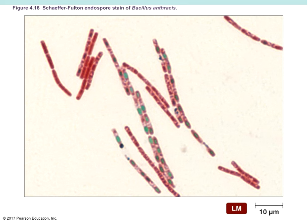Endospore staining is another staining mechanism we will use in class. It uses malachite green — we use steam to drive the malachite green stain into the inside of the cell. We can see whether or not bacillus species form endospores. What we're particularly looking at is Bacillus anthracis, which is the bacteria that causes anthrax. Those green structures are the endospores we talked about in chapter three.